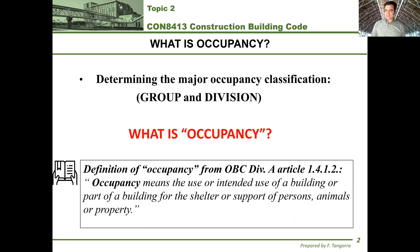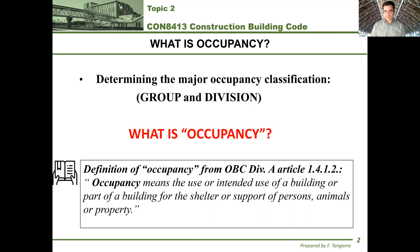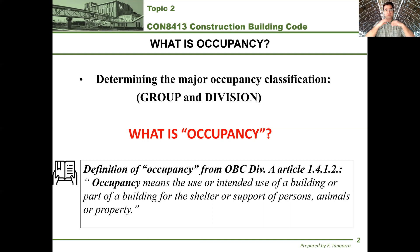The definition basically says that occupancy refers to the use or the intended use of a building or part of that building for the shelter or support of persons, animals, or property. So it refers to how that building is going to be used or is currently in use — for humans, animals, or property, including storage.